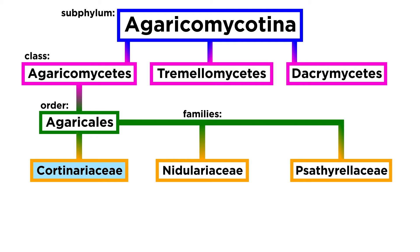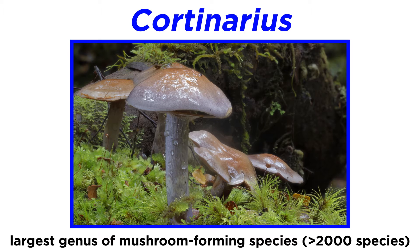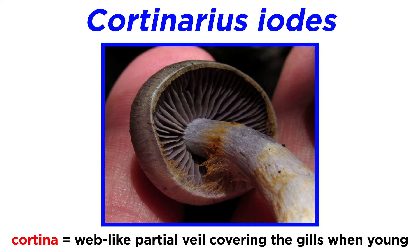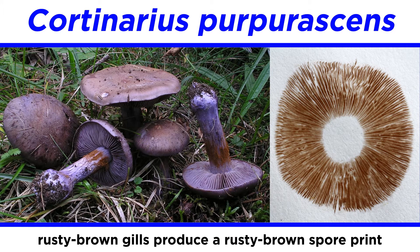Let's begin by discussing the Cortinariaceae family. Generally, this family describes fungi in the genus Cortinarius, which is the largest genus of mushroom-forming species, estimated to have over 2,000 species worldwide. The notable structural characteristic of this genus is the presence of a cortina, a web-like partial veil that covers the gills of the mushroom when young. As the mushroom ages, the remnants of the cortina may form a ring on the stipe or along the margin of the cap. The gills produce a rusty brown spore print, so the gills of Cortinarius mushrooms are generally rusty brown as well.